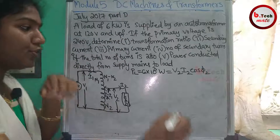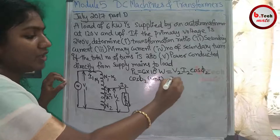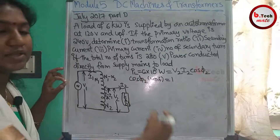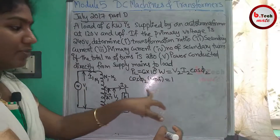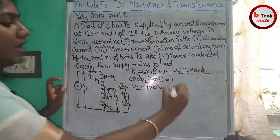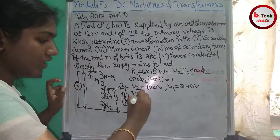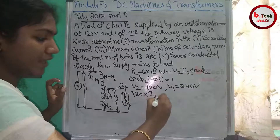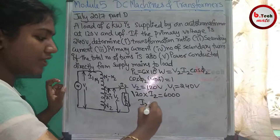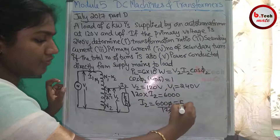The value of UPF means unity power factor, so cos(φ2) equals 1. V2 is 120V and V1 is 240V. So V2 × I2 × cos(φ2) = 6,000, which gives I2 = 6,000 divided by 120, so I2 = 50A.